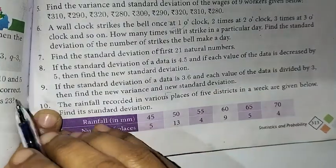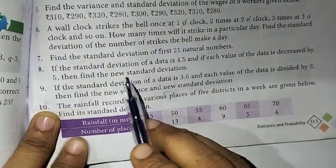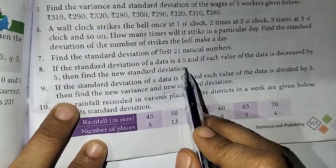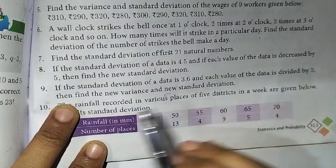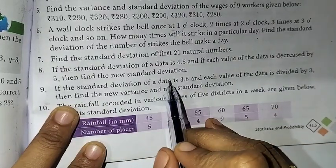How do we go to the problem? If the standard deviation of a data is 4.5 and if each value of the data is decreased by 5, then find the new standard deviation.